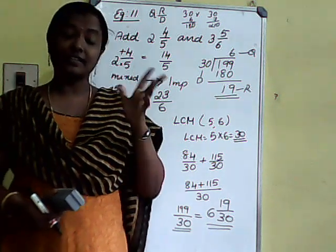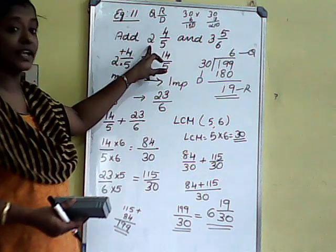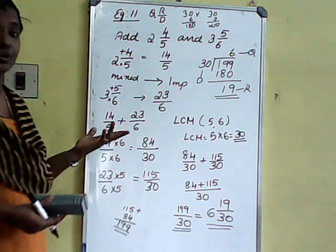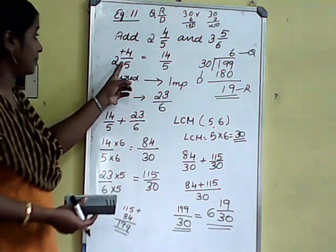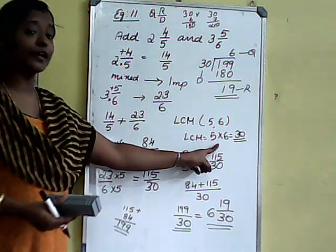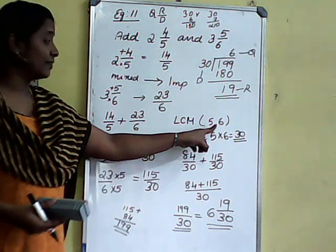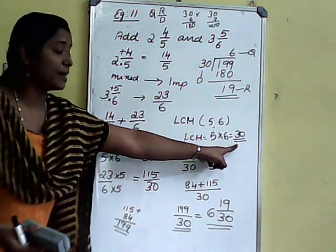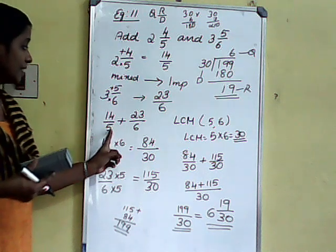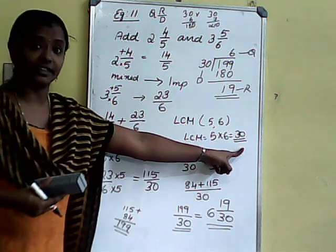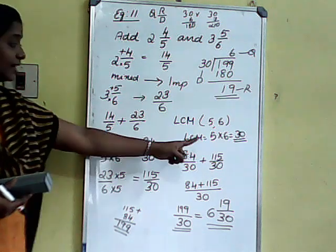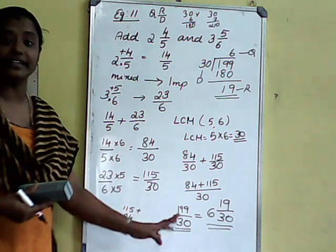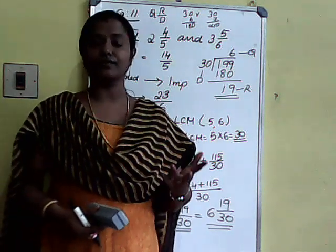So how to add two mixed fractions: first we convert those two mixed fractions to improper fractions, then we continue the same procedure. How to add improper or unlike fractions — we take the LCM. Why do we take their product? Because 5 and 6 are co-prime; there is no common factor between 5 and 6, so their LCM is their product, which is 30. Then we convert both denominators to 30, multiplying numerator and denominator accordingly, and finally we get 199 by 30. You can stop there or convert to a mixed fraction.